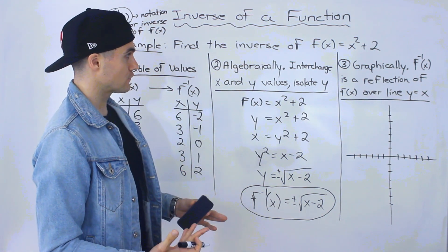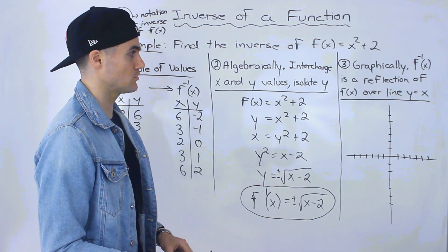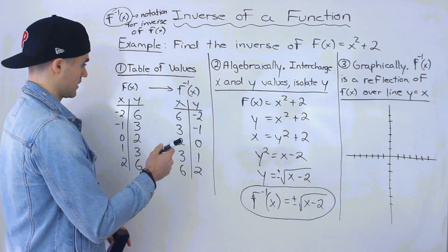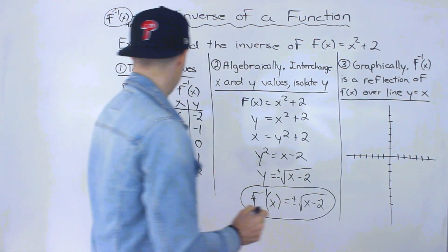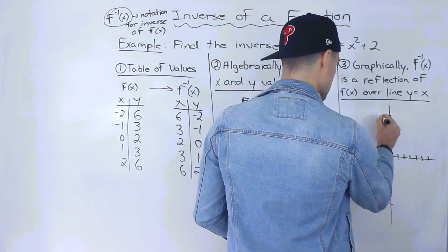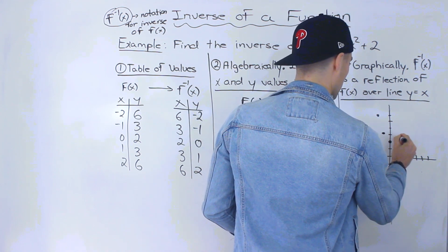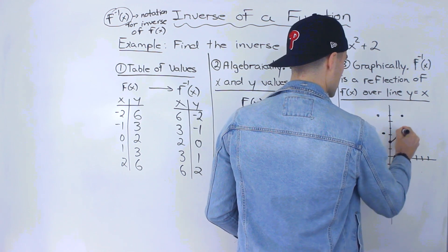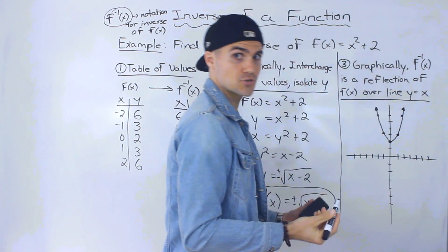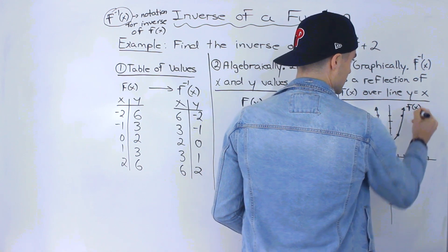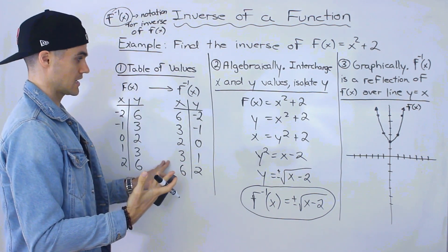The third way we can do this is graphically. The inverse of a function is always going to be the reflection of the function over the line y equals x. I've drawn out a Cartesian plane, and I'm first going to graph the function using these points: negative two and six, negative one and three, zero and two, one and three, and two and six.